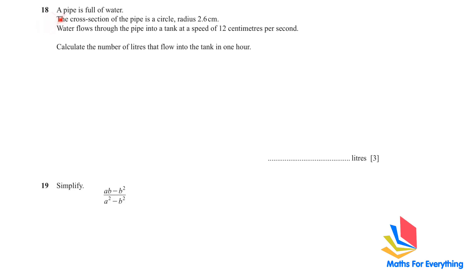Question 18: A pipe is full of water. The cross section of the pipe is a circle, radius 2.6 cm. Water flows through the pipe into a tank at a speed of 12 cm per second. Calculate the number of liters that flow into the tank in 1 hour. There are a lot of things to consider in this question.